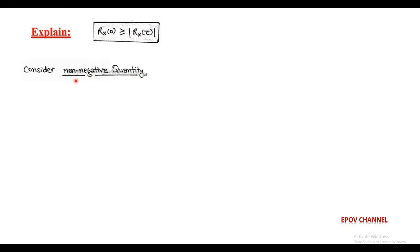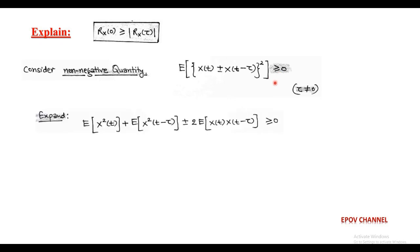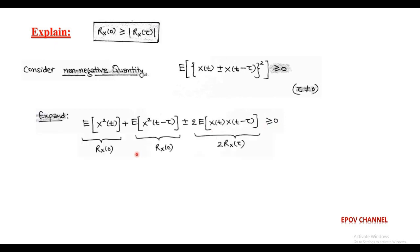This can be understood using the non-negative quantity of the autocorrelation function. The non-negative quantity is expressed as expectation of [X(t) plus or minus X(t minus tau)]² which must be greater than or equal to zero, where tau is not equal to zero. Expanding using the formula of (A ± B)² gives: expectation of X²(t) plus expectation of X²(t minus tau) plus or minus twice expectation of X(t) X(t minus tau), all greater than or equal to zero. The first and second terms equal the mean square value R_X(0), and the third term is R_X(tau).